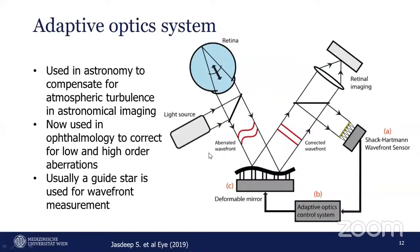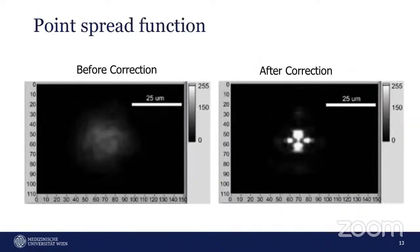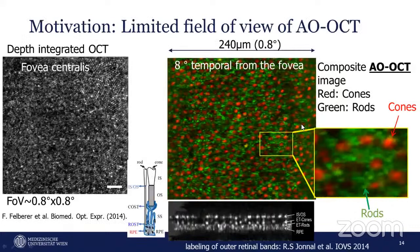When the adaptive optics system is combined with OCT, we have an adaptive optics OCT system. Before correction, the point spread function appears very blurred. After correction with the adaptive optics system, we obtain a much better intensity profile of the point spread function.